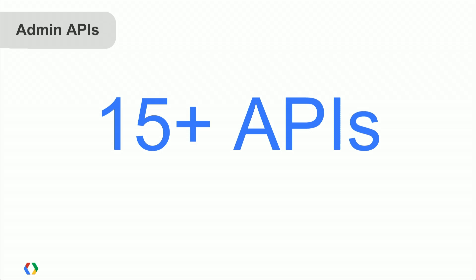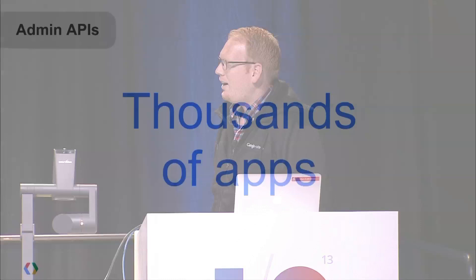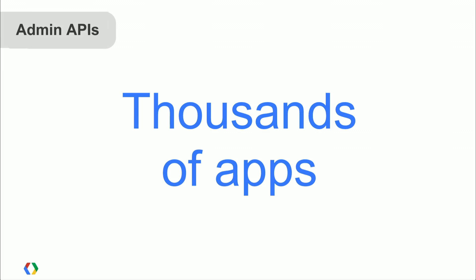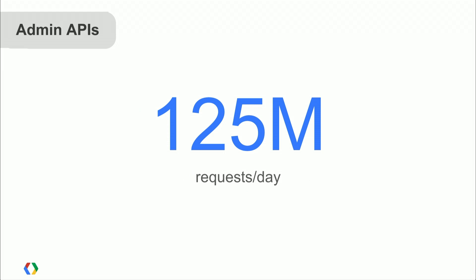This is a collection of more than 15 APIs — things like the provisioning API, the group settings API, or the reports API. Thousands of applications use these APIs every single day, translating into more than 125 million requests per day. That's more than a lot of small companies get for their entire app. These requests are managing Google Apps for Business domains.